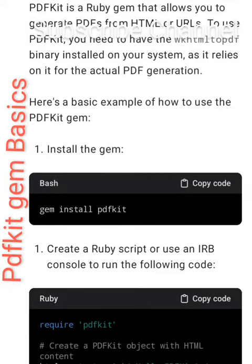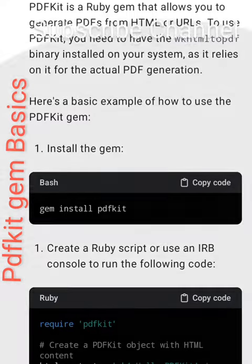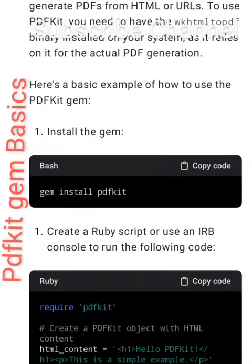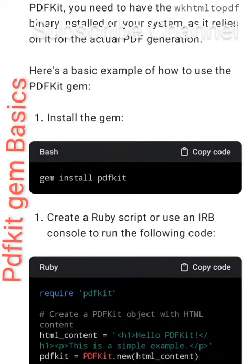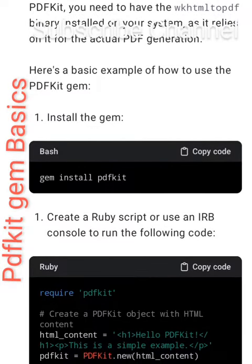PDFKit is a Ruby gem that allows you to generate PDFs from HTML or URLs. To use PDFKit, you need to have the wkhtmltopdf binary installed on your system, as it relies on it for the actual PDF generation.